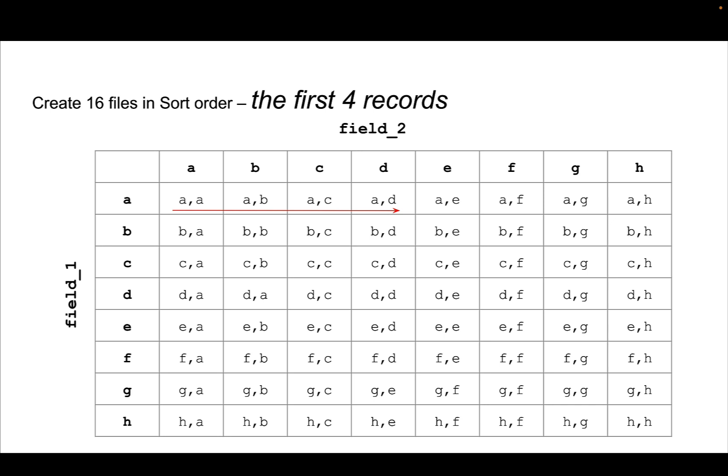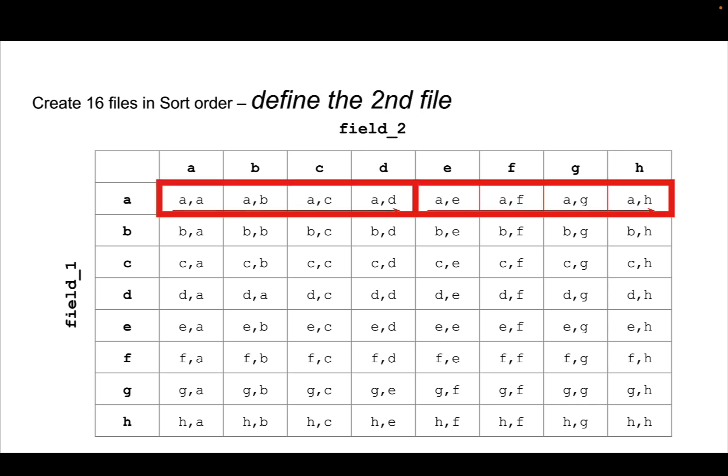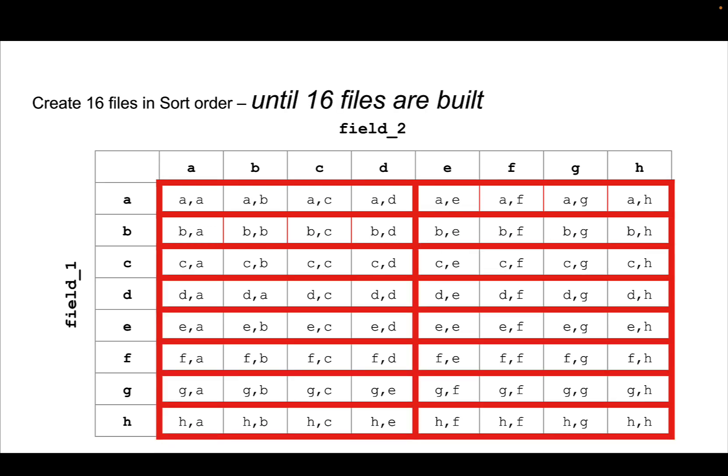So we're just going to walk this. Those first four records get created as a file. I'll grab those next four records, that's a second file. Guess what, we've got another file, yet another file, and so on and so on until we have our 16 files built.